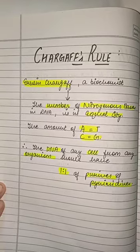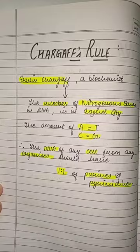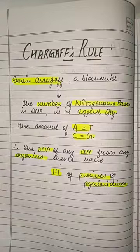Hello everyone, welcome back. Today we'll learn about Chargaff's rule. It was given by Erwin Chargaff, who was a biochemist. This rule is all about the number of nitrogenous bases in DNA.